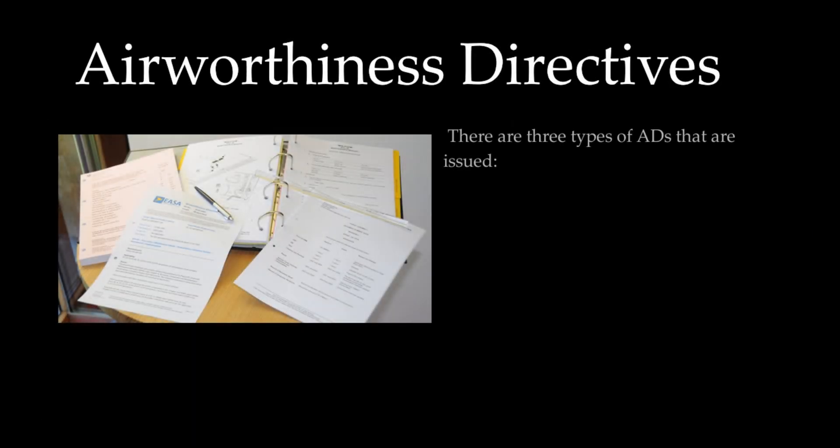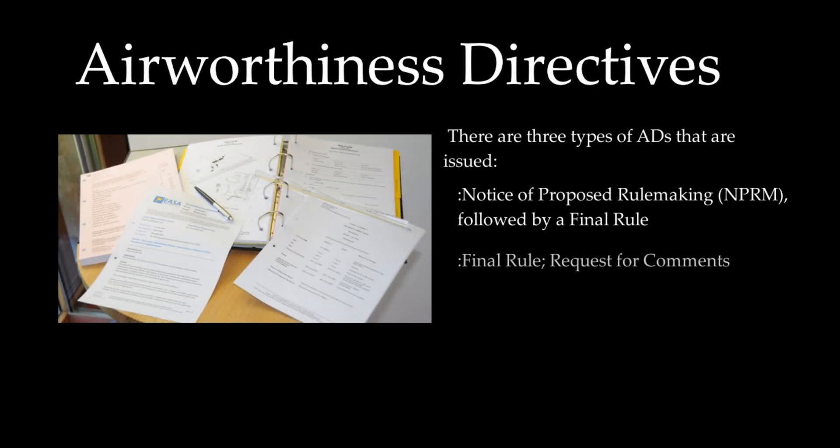There are three basic types of AD: the NPRM, the final rule, and the emergency AD. The standard AD process is to issue an NPRM followed by a final rule. After an unsafe condition is discovered, a proposed solution is published as an NPRM, which requests public comment on the proposed action. After the comment period closes, the final rule is prepared by taking into account all substantive comments received. There are also incidents where the critical nature of an unsafe condition may warrant the immediate adoption of a rule without solicitation from the public.